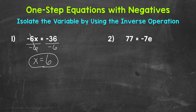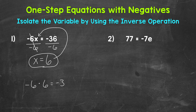We can always check a solution by plugging it into the original equation. Let's plug 6 in for x: negative 6 times a positive 6 equals negative 36. A negative times a positive equals a negative, so negative 6 times positive 6 does equal negative 36. We have the correct solution: x equals 6.